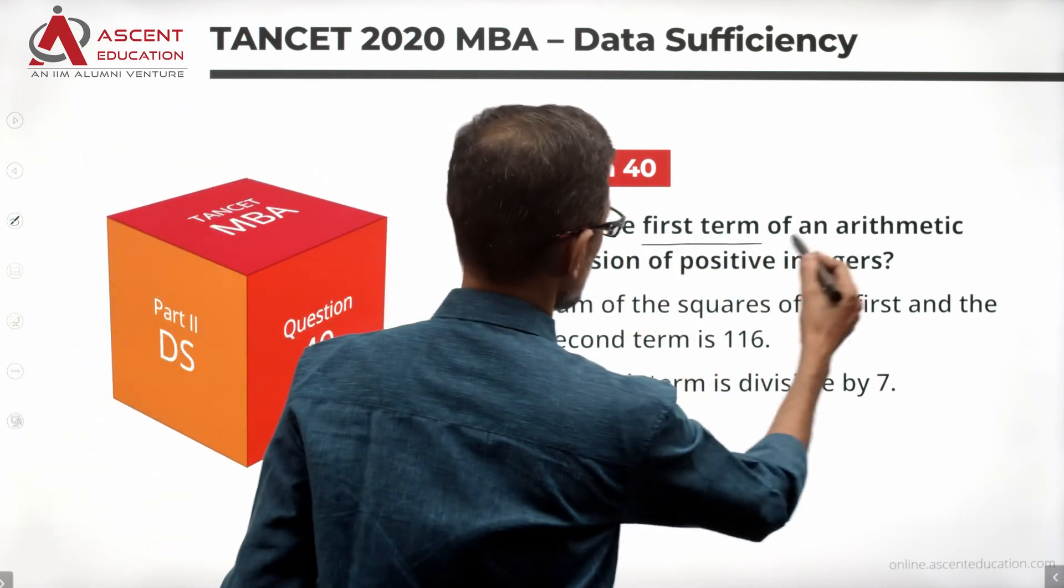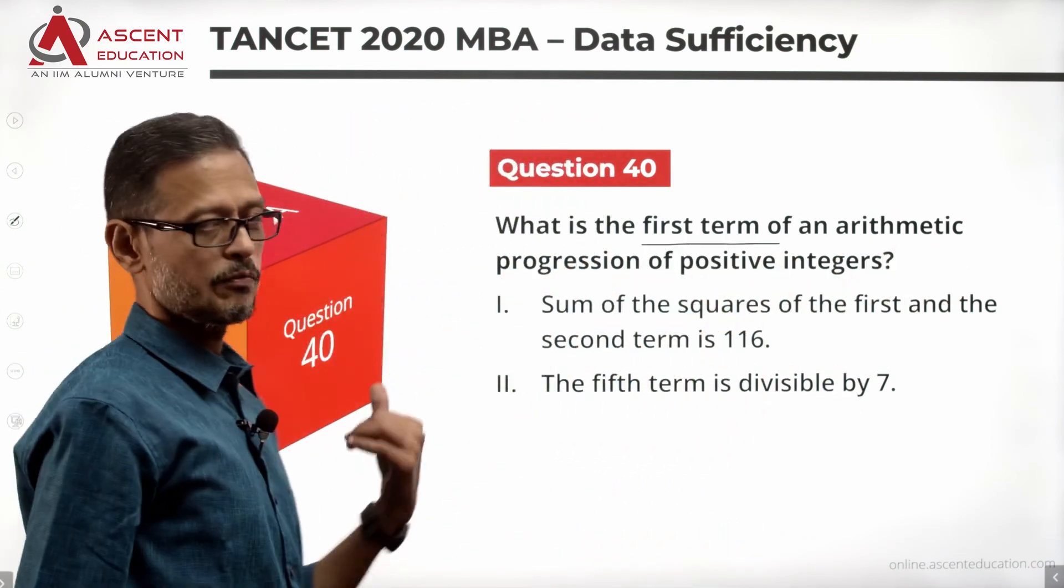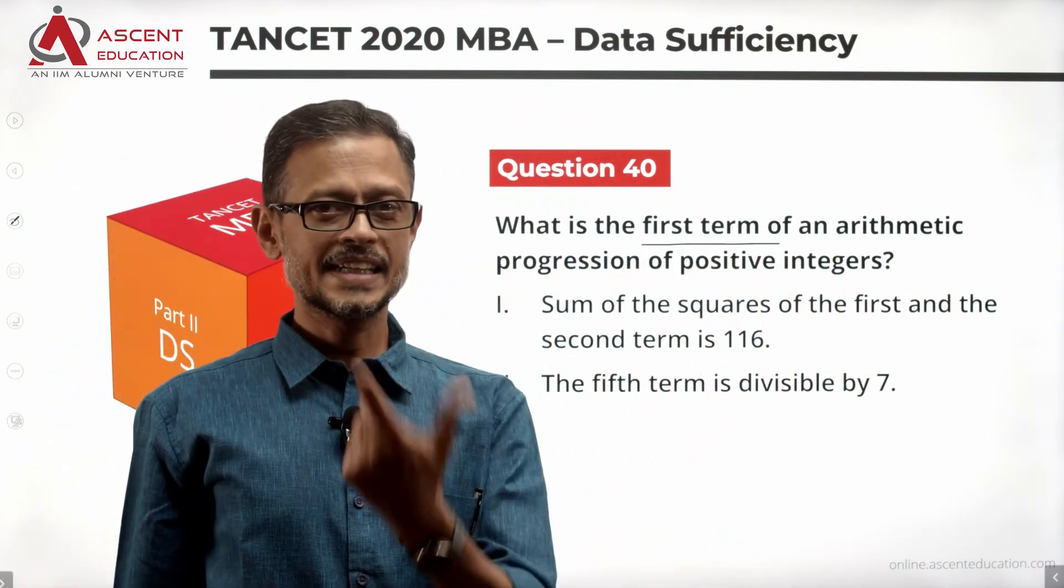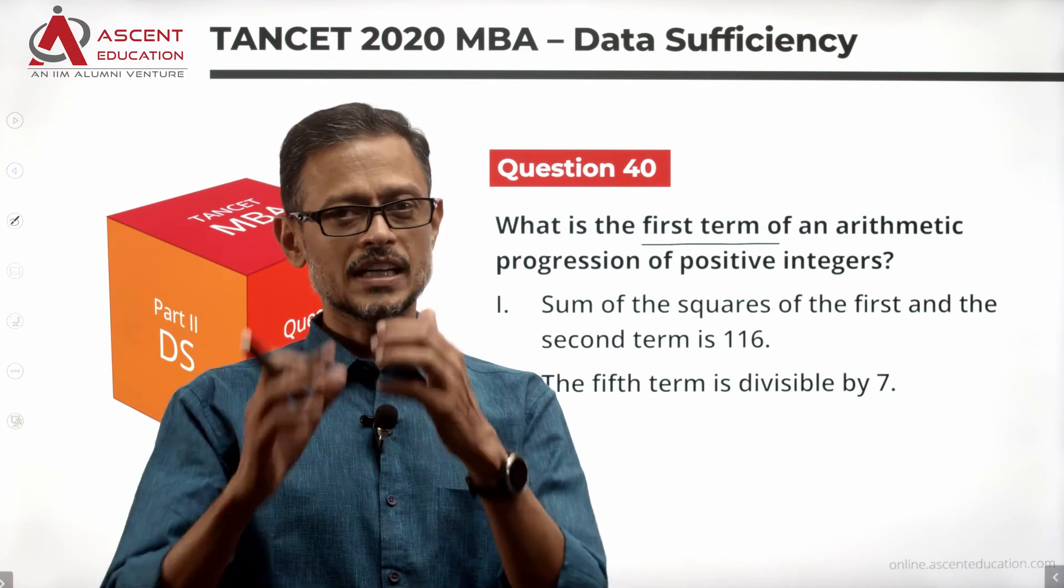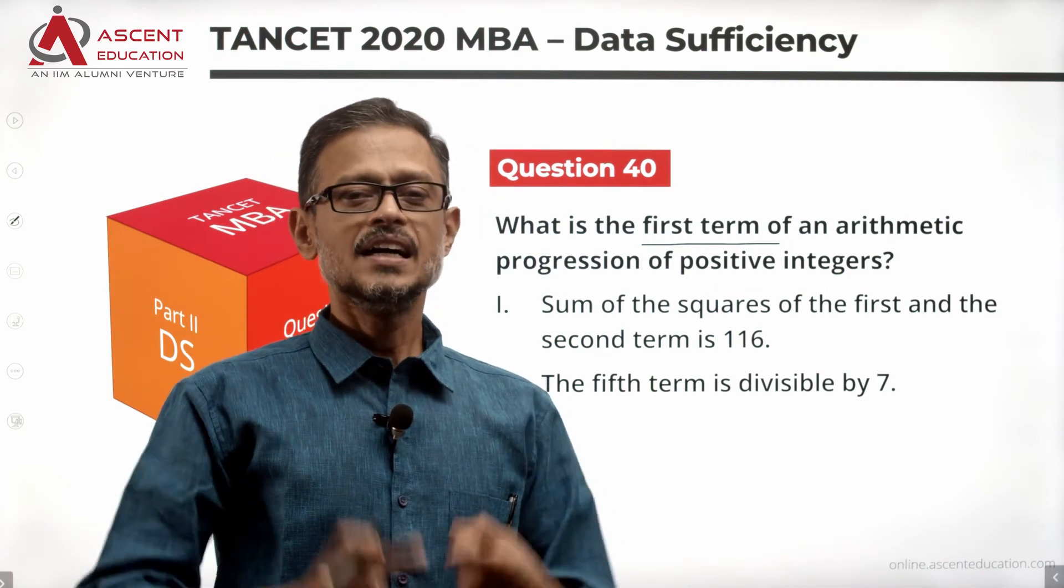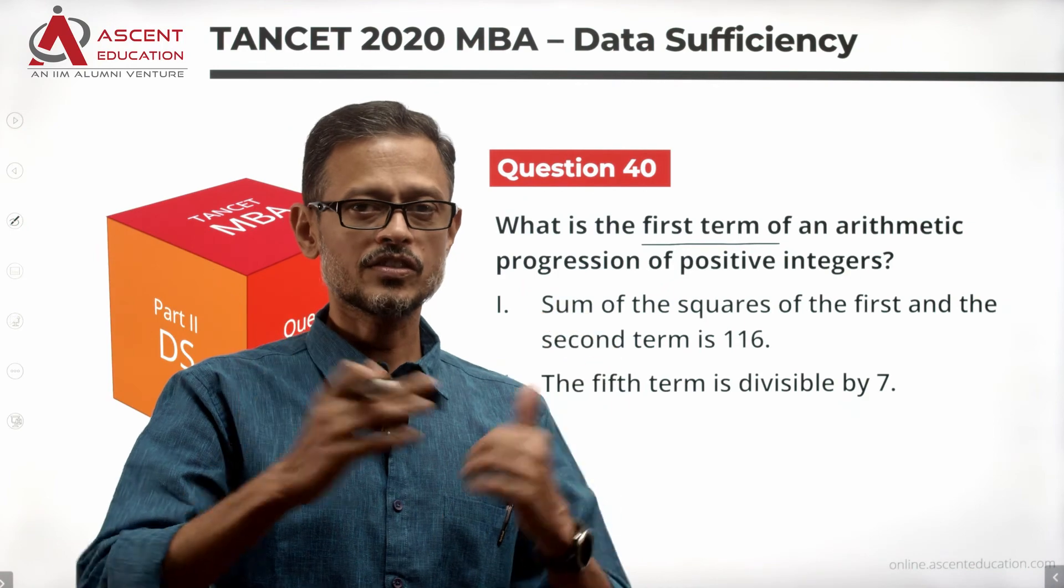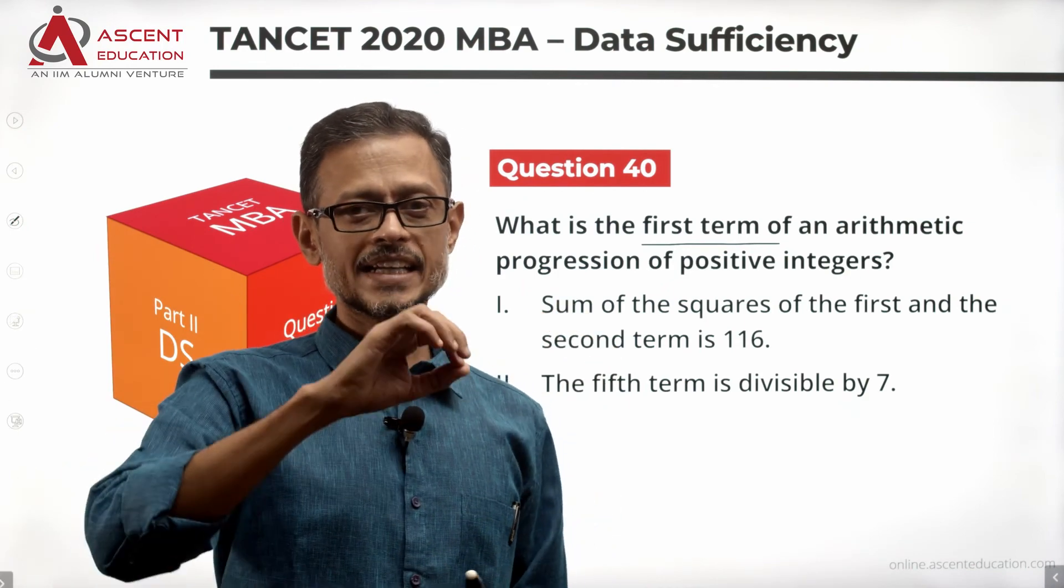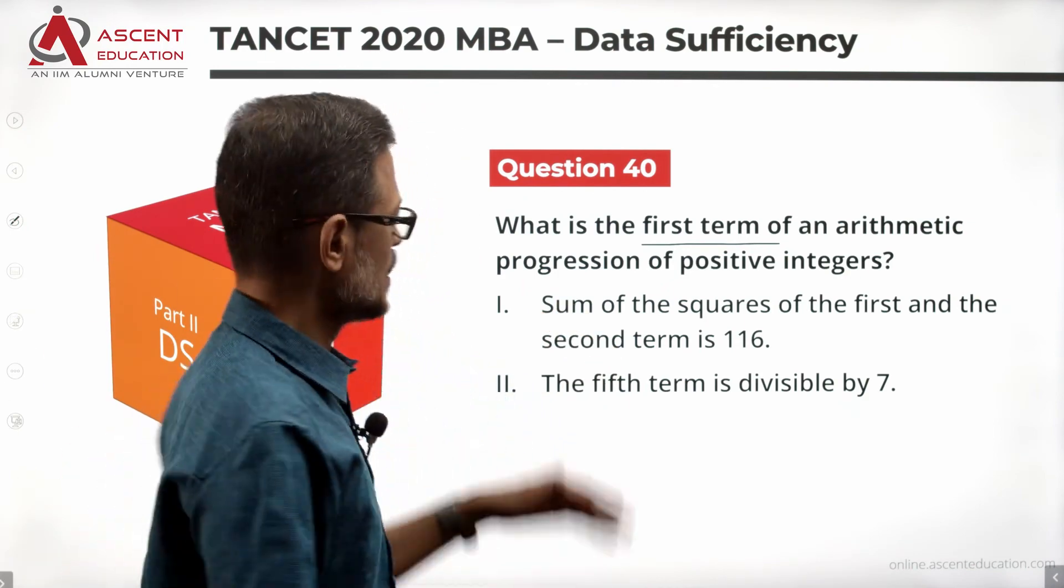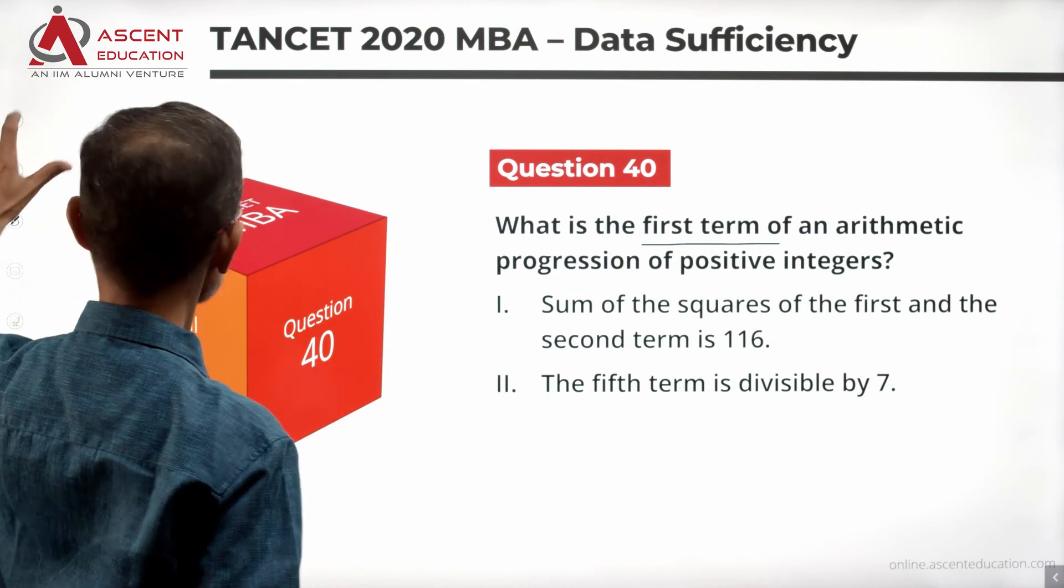What is the first term of an arithmetic progression of positive integers? The arithmetic progression is a progression of positive integers, so no negative numbers. Two statements are given. Let's take a look at the statements in a while.